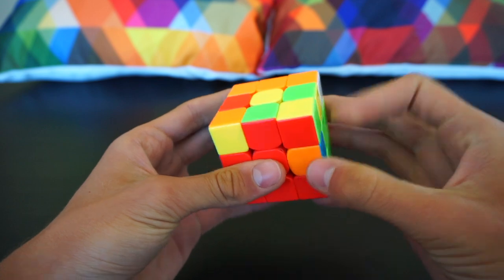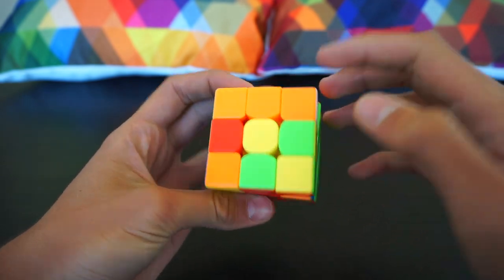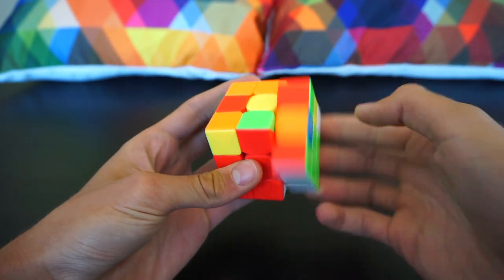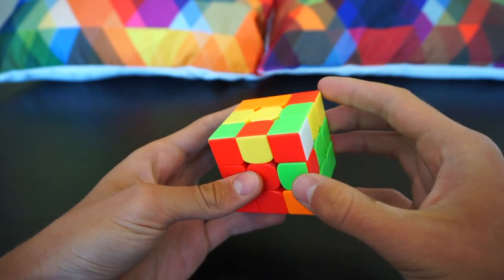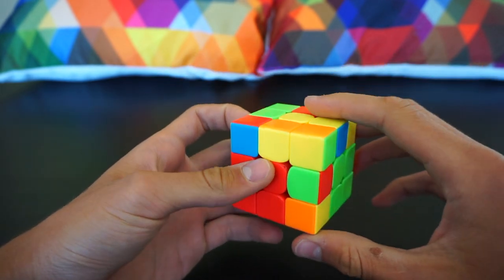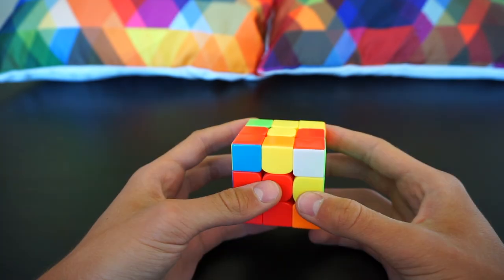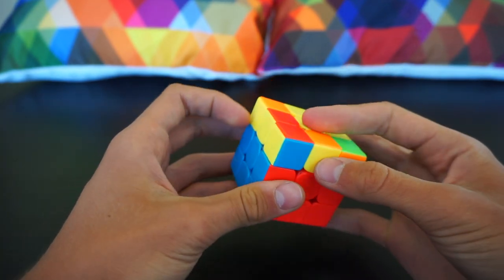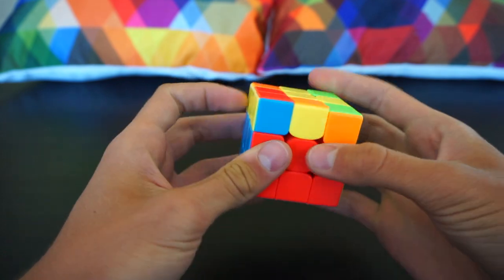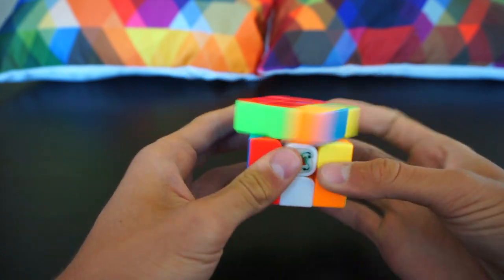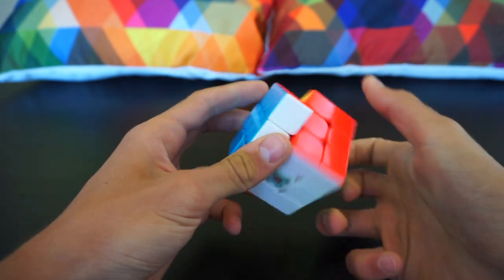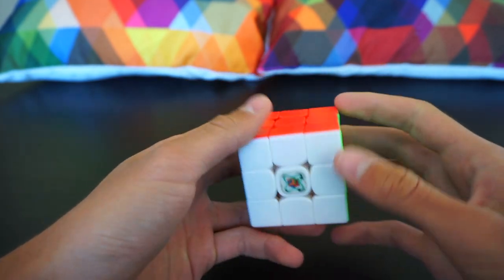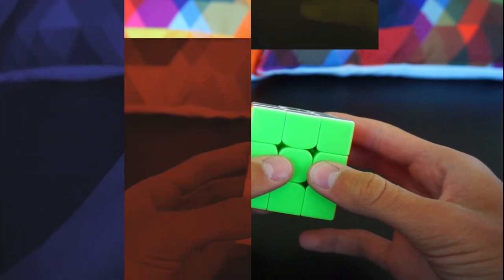Then this pair, orange and blue. Here's the edge, we can pair it up and insert it in the back. Now I did U prime and connected these two and inserted it. Then here is a pretty easy OLL case and a J perm. So this was a 10.11 second solve.